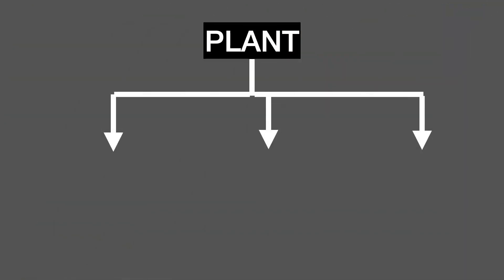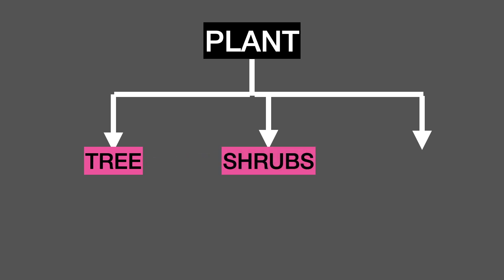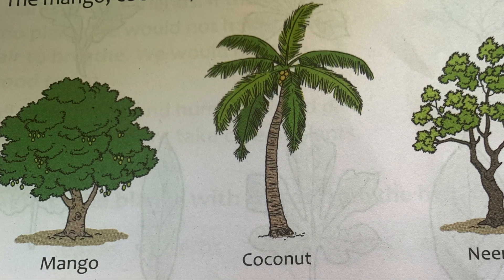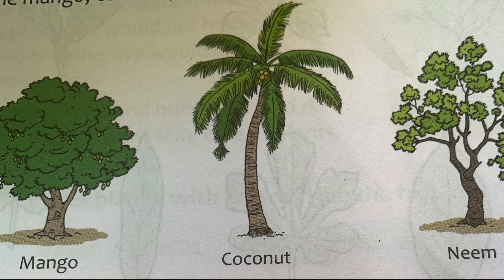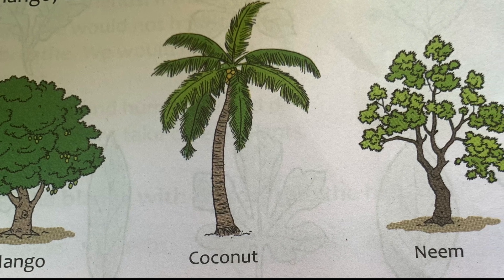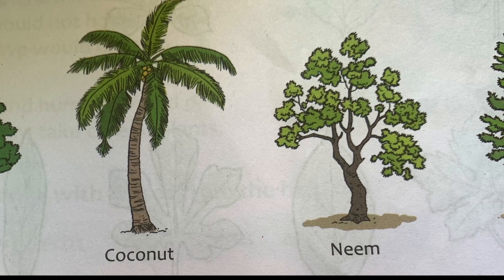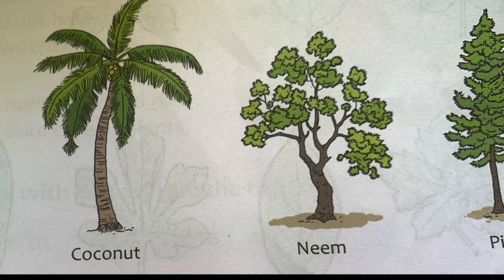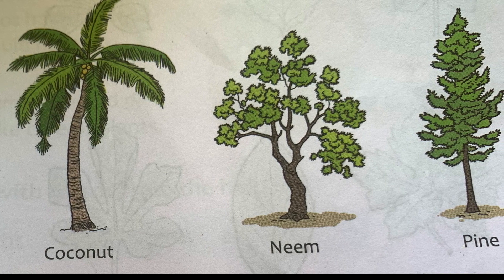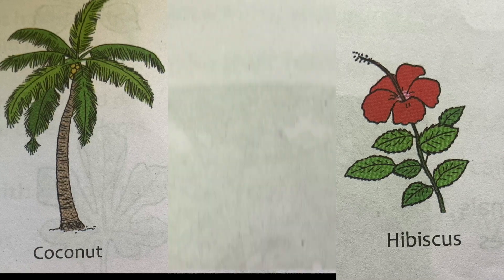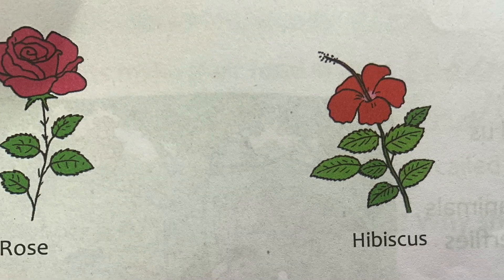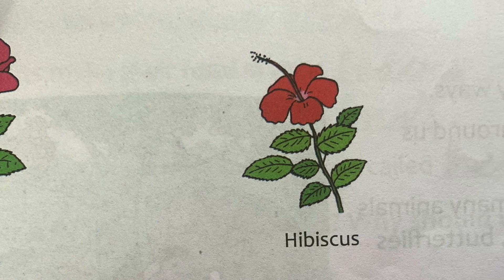There are different kinds of plants. They are trees, shrubs and herbs. Big plants are called trees. They have a single thick stem called the trunk. The mango, coconut, neem and pine are some common trees.